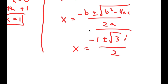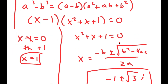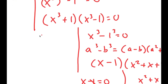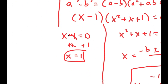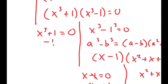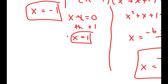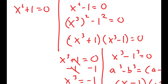Now we aren't done yet because we also have to solve the remaining equations. For x to the power of 3 plus 1 equals 0, I'm going to subtract 1 on both sides, so I get x cubed equals negative 1, meaning x is also equal to negative 1. So this is another solution.